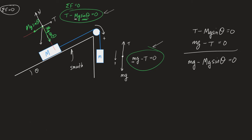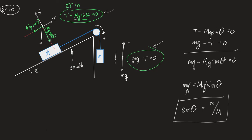The AP graders need to see a clear line of reasoning, so do something to let them know what you're doing. From here, we're trying to get theta by itself. You can cancel the g's, leaving m equals M sine theta, or sine theta equals m over M. This is the answer to most of the problem. If you go from a five-kilogram mass to a three-kilogram mass, the angle has to increase — because sine gets bigger when the angle gets bigger.